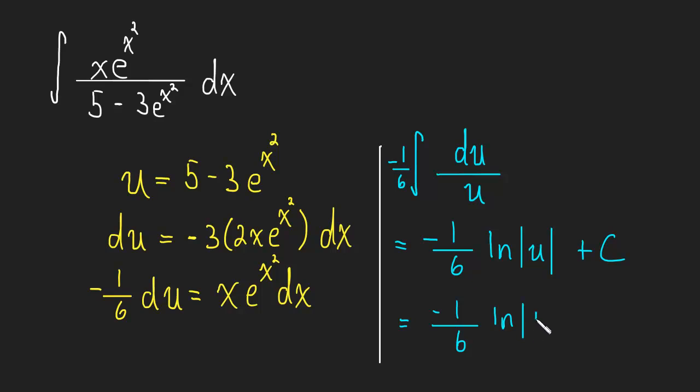5 minus 3x squared—oh, it's 3e to the x squared, sorry—plus c.